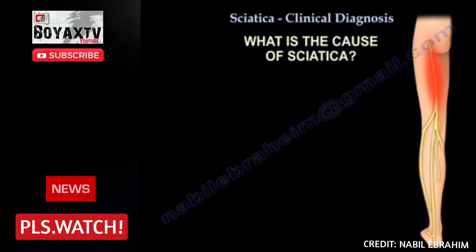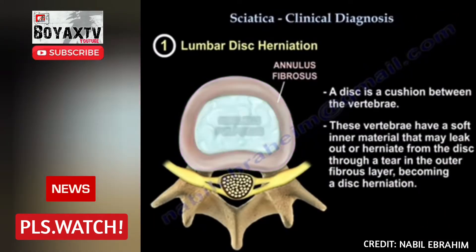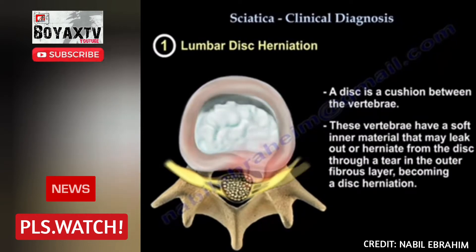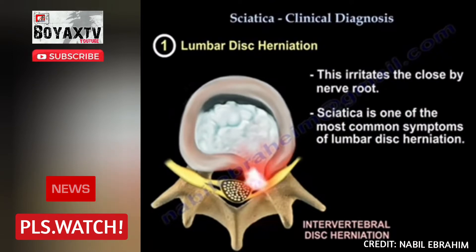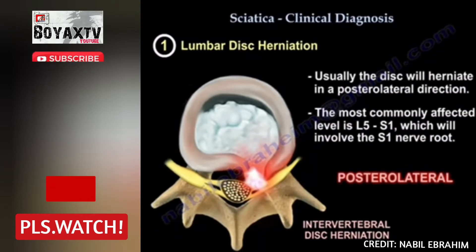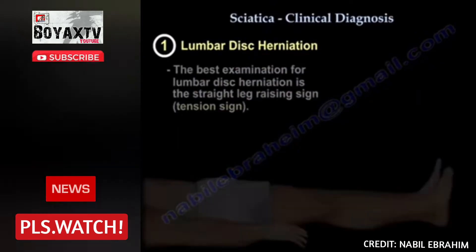The number one cause of sciatica is lumbar disc herniation. A disc is a cushion between the vertebrae with a soft inner material. When this material leaks or herniates through a tear in the outer fibrous layer, it becomes a disc herniation, which irritates the nearby nerve root. Sciatica is one of the most common symptoms of lumbar disc herniation, and the disc usually herniates in a posterolateral direction, most commonly at the L5-S1 level, involving the S1 nerve root.